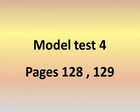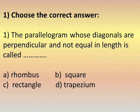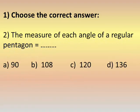Model test, number one. Choose one: the parallelogram whose diagonals are perpendicular and not equal in length is called the rhombus. Perpendicular and not equal.